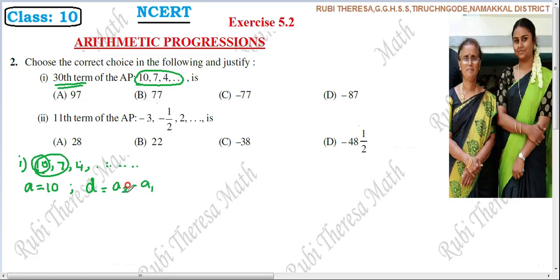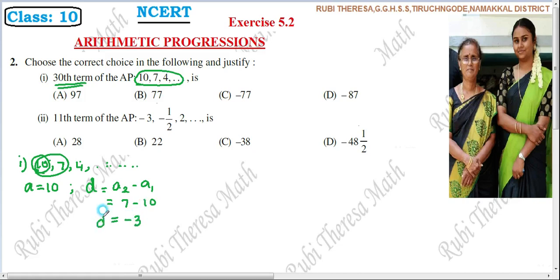The second term minus the first term: 7 minus 10. Since 10 is the greater number, we do the subtraction as 10 minus 7 equals 3, and since the greater number carries the minus sign, D equals minus 3. So now we have A equals 10 and D equals minus 3.